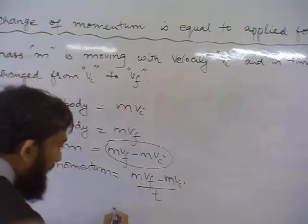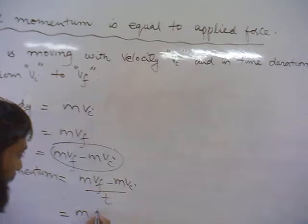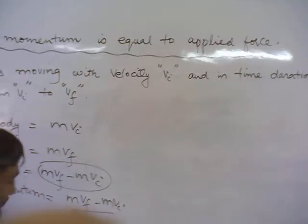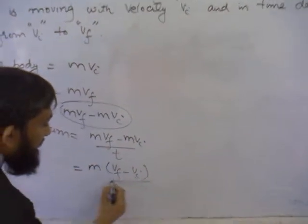Now, you see a common here - m is common. So, m times v_f minus v_i divided by t.